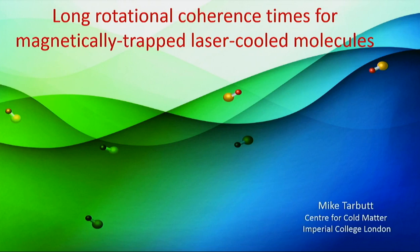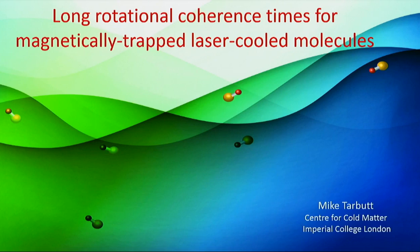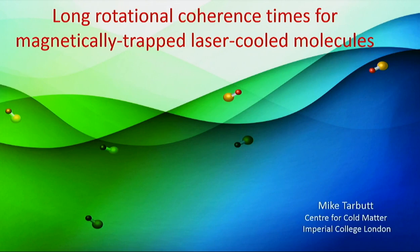How long is long enough? If I imagine taking a pair of molecules in tweezer traps and bringing them as close as possible — about half a micron — the strength of the dipole-dipole interaction is a few kilohertz. Another example would be trapping molecules magnetically close to the surface of a chip in microscopic magnetic traps and coupling them via a superconducting microwave resonator, giving coupling strengths of tens of kilohertz. In both cases, for high-fidelity quantum operations, you'd like rotational coherence times of tens of milliseconds or preferably longer.